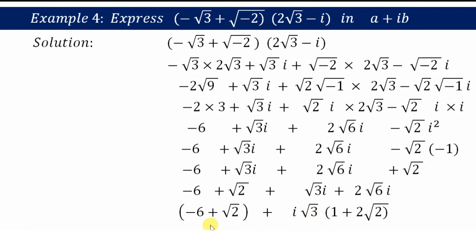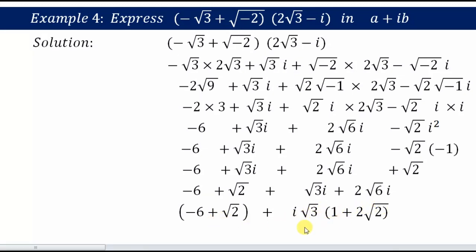So the final answer is in the form a+ib, where a = (-6 + √2) and b = √3(1 + 2√2). This whole term is a and this whole term is b, so the expression is now in the standard a+ib form. I hope it is clear — if you have any doubts, ask me in the comments. Thank you.